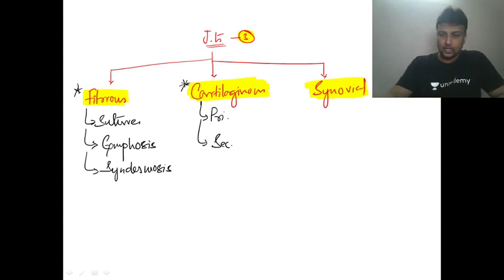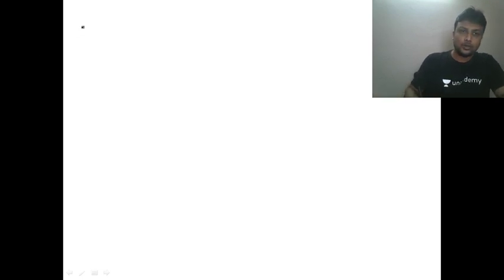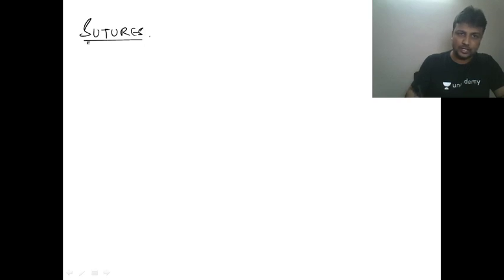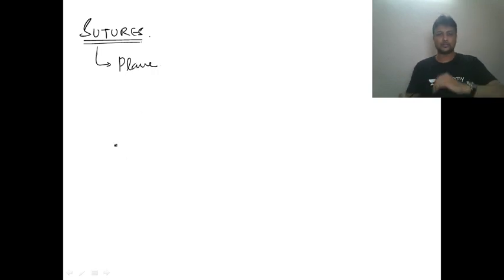Fibrous joint is divided into three categories: sutures, gomphosis, and syndesmosis. Let's study all three one by one. For sutures, there are certain important questions asked in previous exams, so let us deal with them in detail.